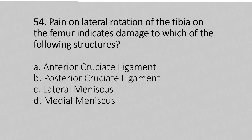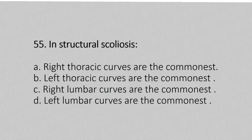Now let's move to question number 54. Pain on lateral rotation of the tibia on the femur indicates damage to which of the following structures? Option A, anterior cruciate ligament; option B, posterior cruciate ligament; option C, lateral meniscus; option D, medial meniscus. And the answer is option C, lateral meniscus.